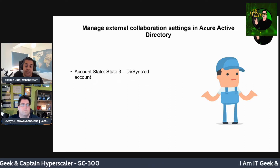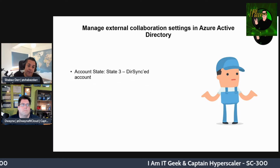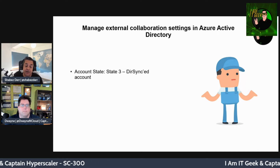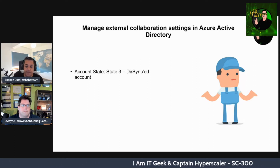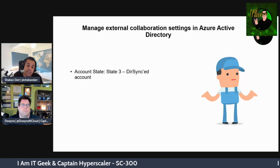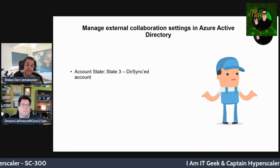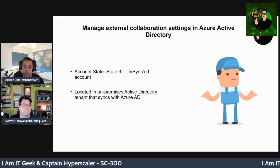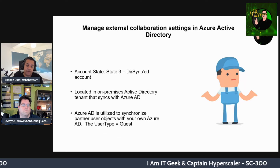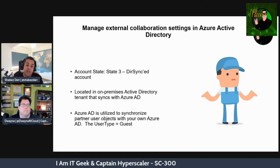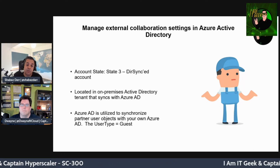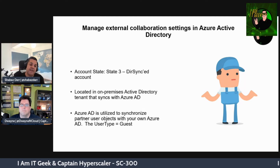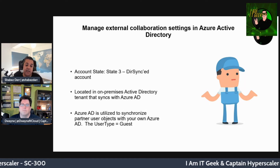Account state three is the directory-synced account. The user object is homed in an on-premises Active Directory — or a domain controller in Azure — and synchronizes through Azure AD Connect to Azure AD on the partner side. Their account is on-premises AD, synced with their Azure AD tenancy. You send an invitation from your Azure AD tenancy, and they are classed as user type 'guest' in your inviting tenancy, even though they're a synchronized object.